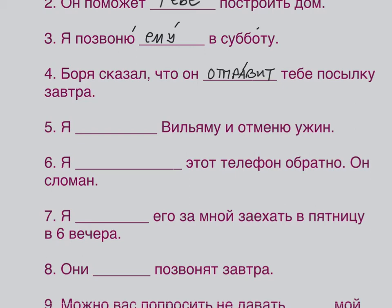Я ПОЗВОНЮ WILLIAM И ОТМЕНЮ УЖИН — I'll call William and cancel the dinner. ПОЗВОНЮ — I'll call; ОТМЕНЮ — will cancel; УЖИН — dinner.